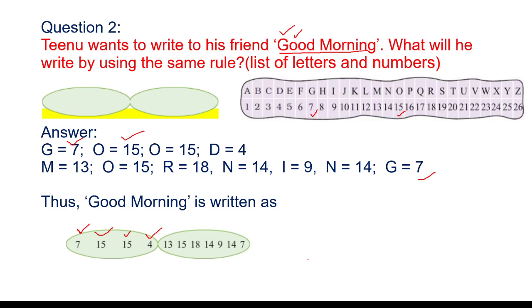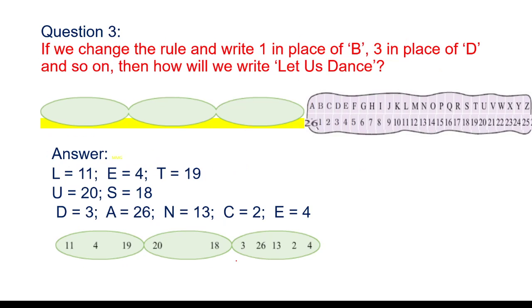You have to code it in this way. This is the answer for 'good' and this one is for 'morning.' You have to complete the full word 'good morning' by replacing each letter with its position number in the alphabet.